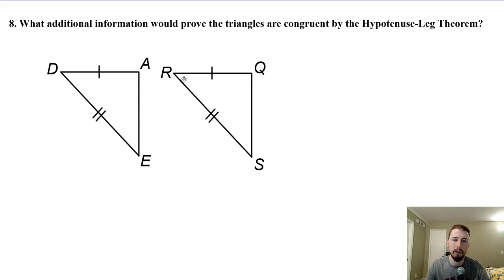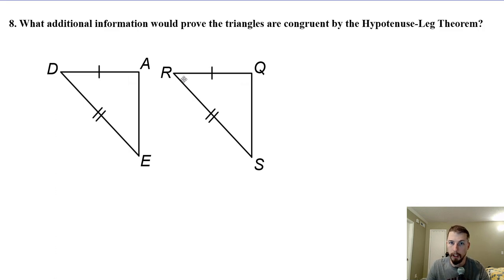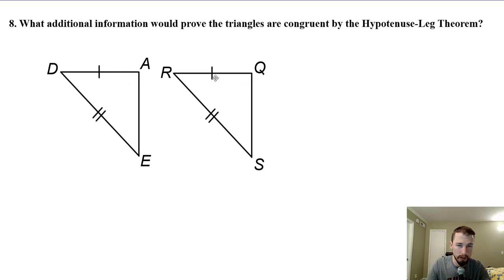Number eight: what additional information would prove the triangles are congruent by the hypotenuse-leg theorem? For the hypotenuse-leg theorem you need three things: a right angle, a hypotenuse, and a leg. It looks like we already have our hypotenuses congruent and these two legs are congruent. So the only thing we're missing is that we need to know this is a right angle — meaning angle A and angle Q have to be right angles. You can just mark it on the diagram.